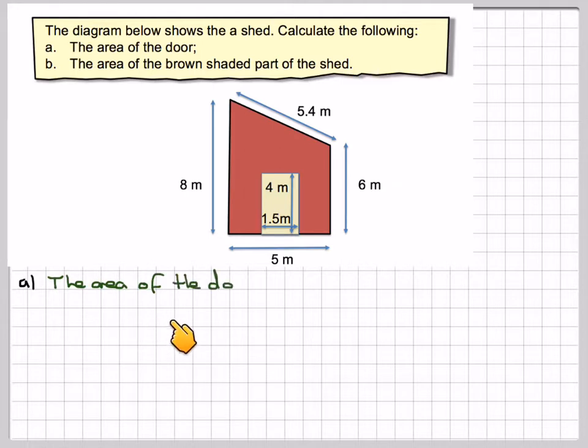So the area of the door will be equal to 1.5 times 4, which is 6 metres squared.